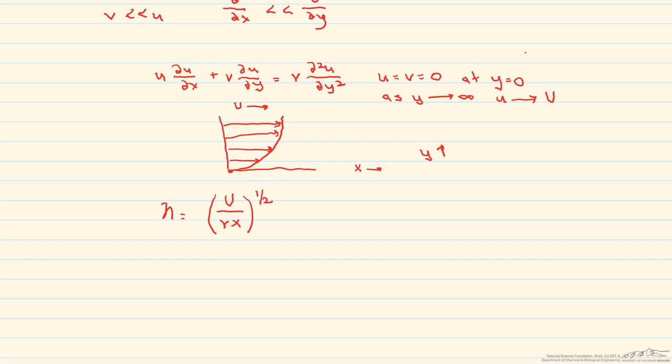By manipulating the boundary layer equations and applying the boundary conditions, we integrate the resulting equation on a computer. Then we can find this similarity variable as a function of little u over big U as shown in the table.